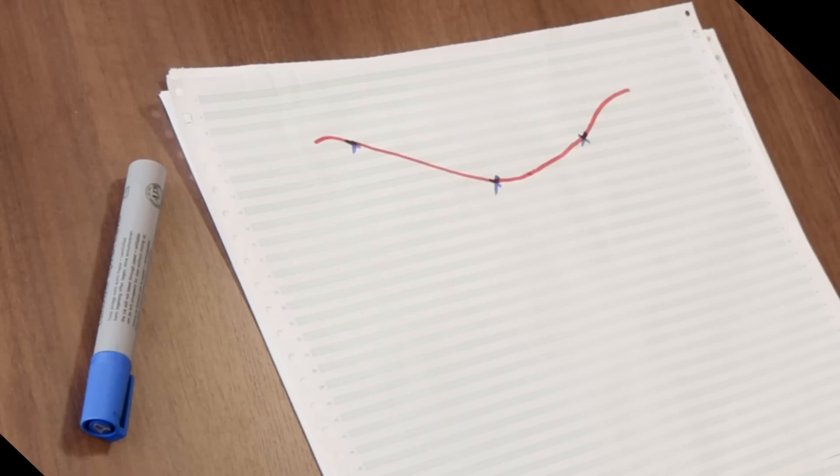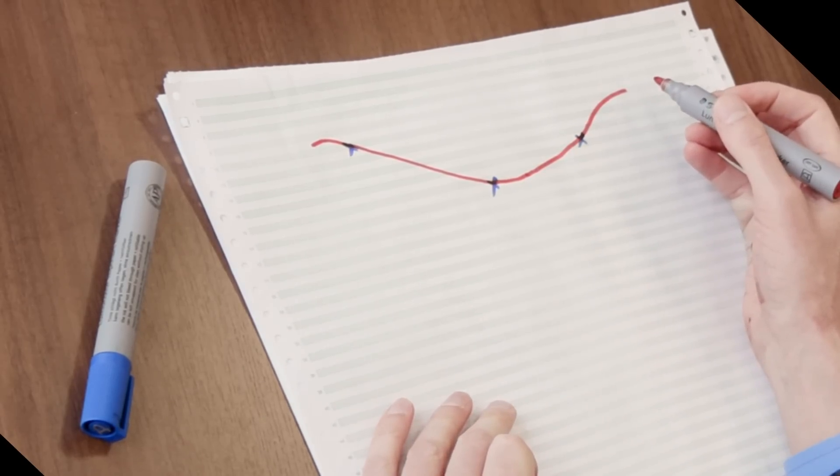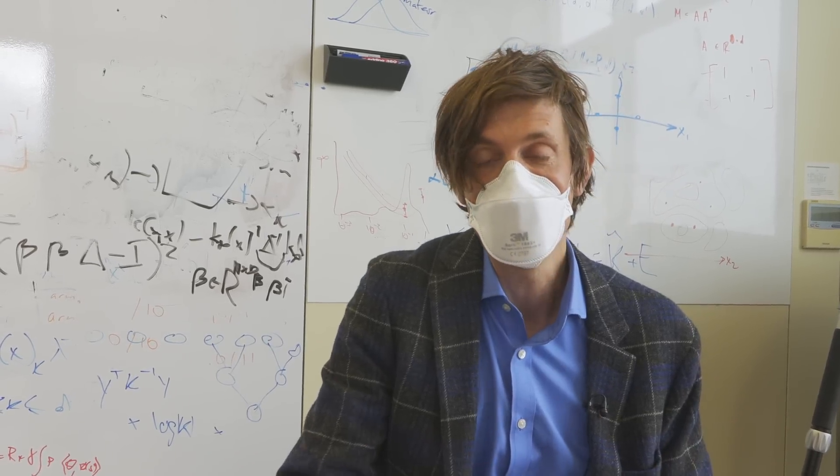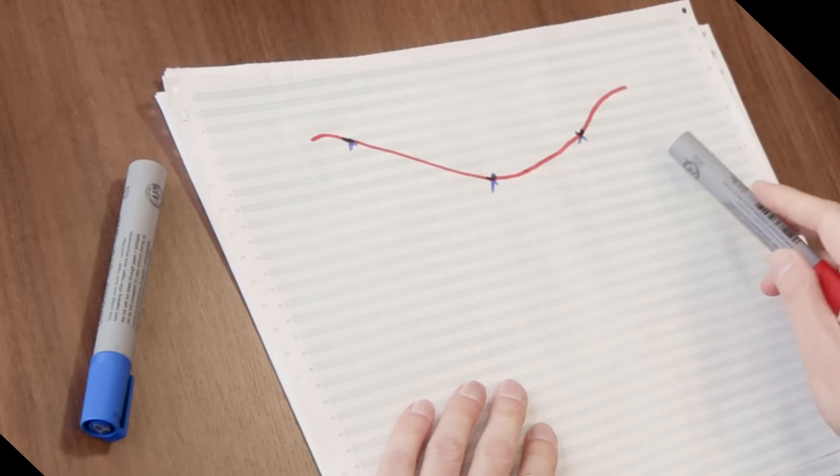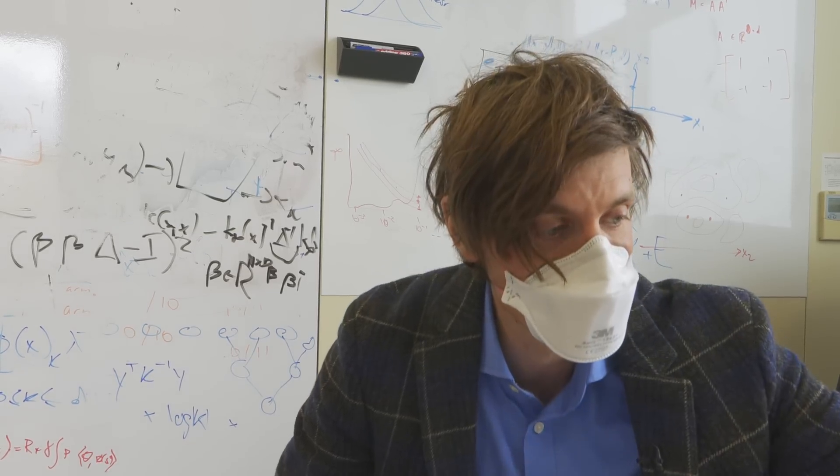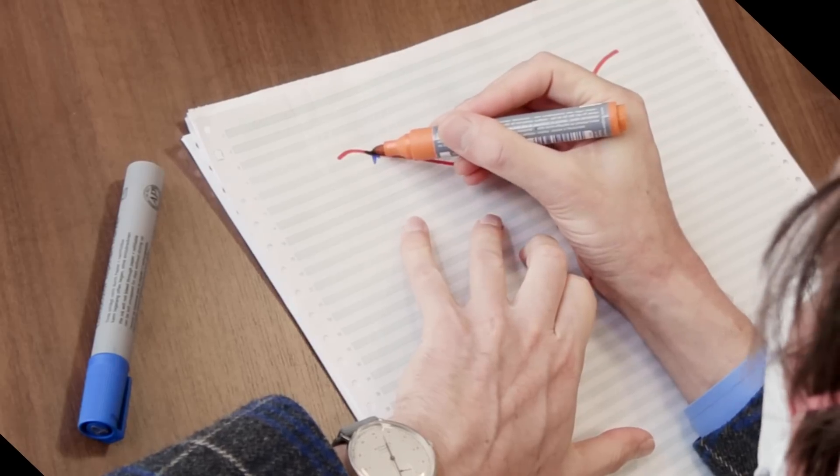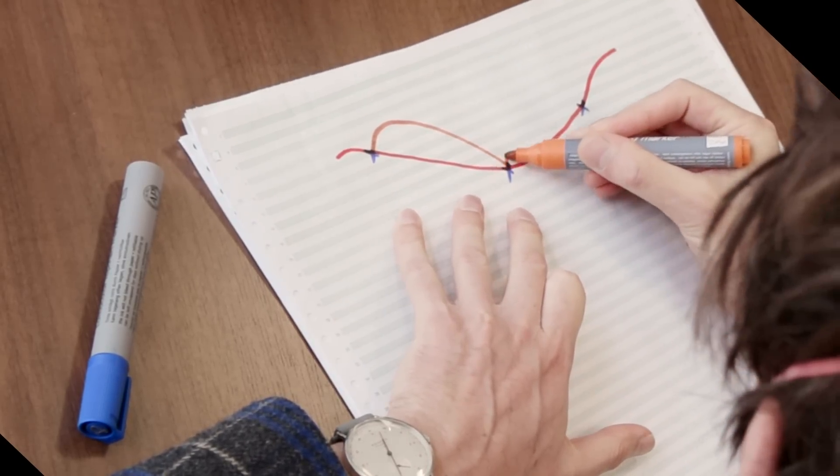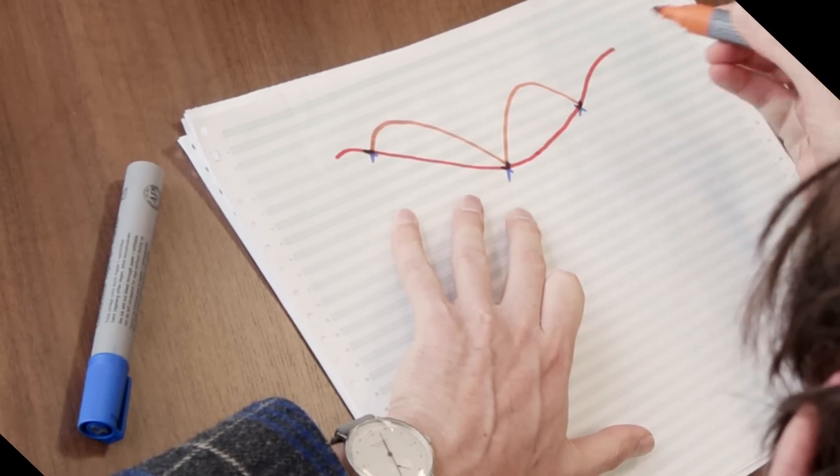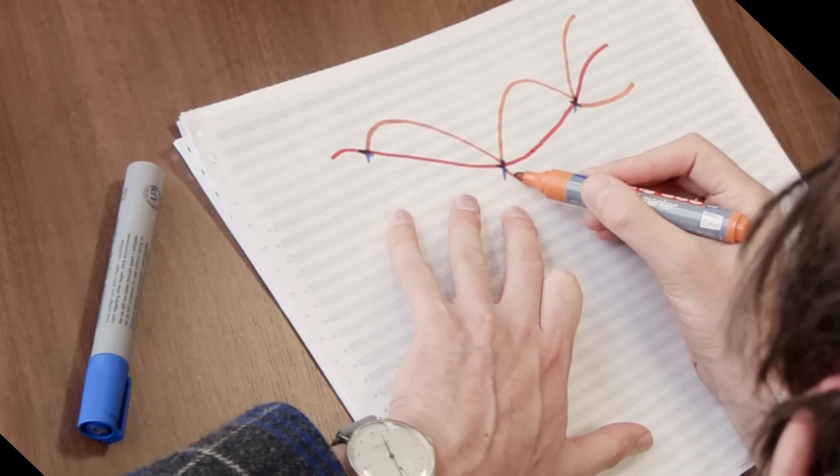The most common approaches today stop there, giving you this line of best fit, the best prediction. But Bayesian probability theory goes one step further and says in addition to connecting the dots, I'm also going to give you an indication of how confident I am in those predictions between and away from the dots. So what I'm drawing now on top of those crosses, on top of my best predictions, are envelopes of uncertainty.